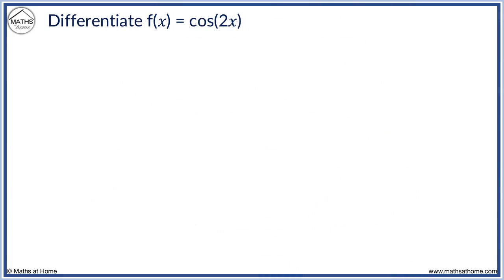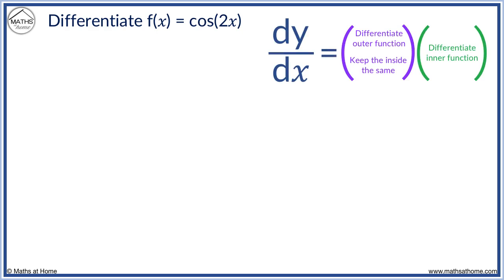For example, here is cos 2x. We write the function as an inner function of 2x and an outer function of cos. dy dx can be written as f dash x. We differentiate the outer function.